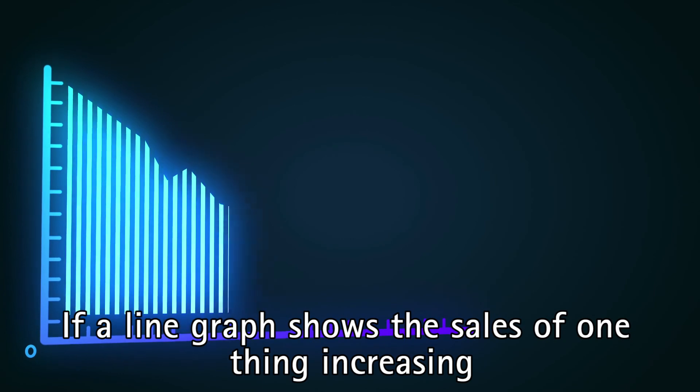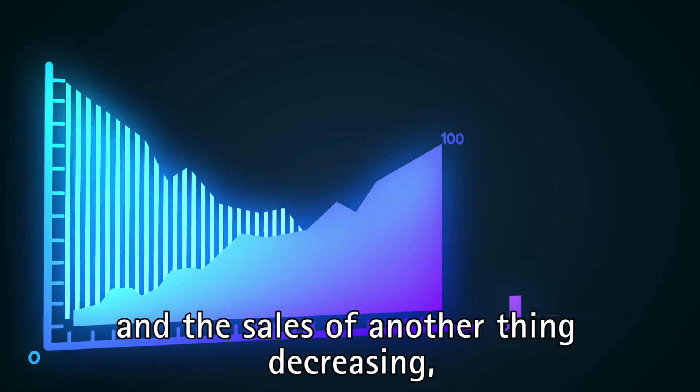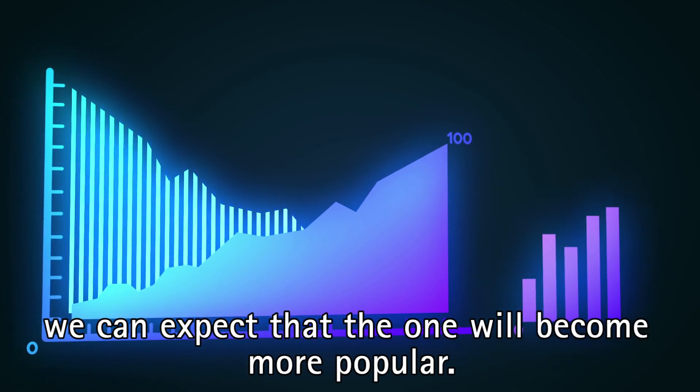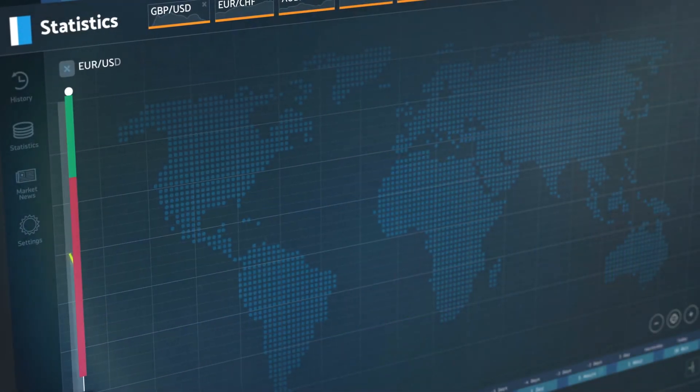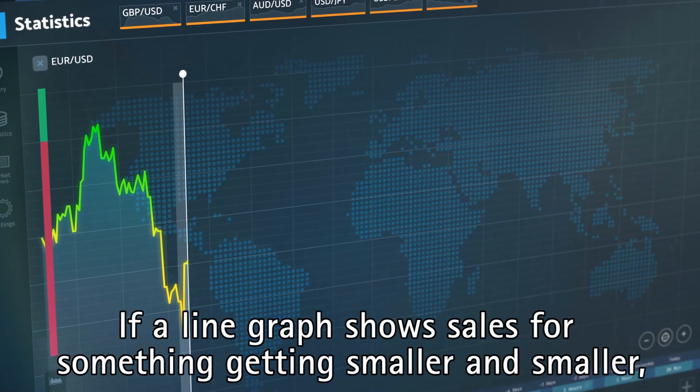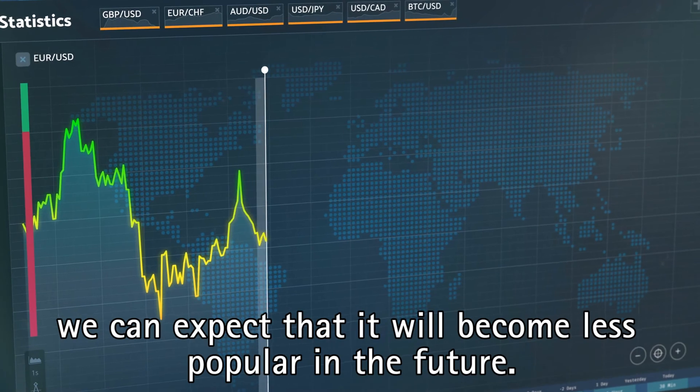If a line graph shows the sales of one thing increasing and the sales of another thing decreasing, we can expect that the one will become more popular. If a line graph shows sales for something getting smaller and smaller, we can expect that it will become less popular in the future.